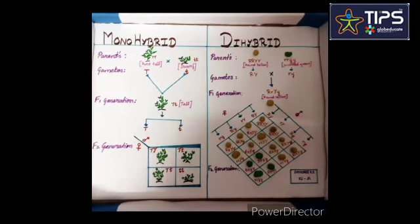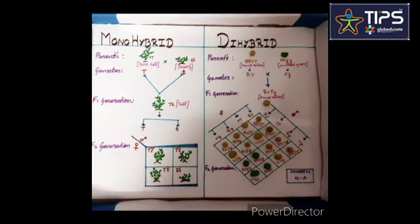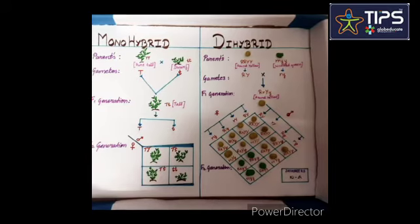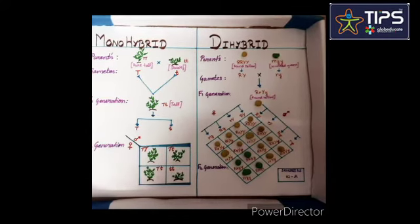Now let us see about the dihybrid cross. Di refers to 2 or double and hybrid means breed. Dihybrid cross is used to study the inheritance of two different alleles.